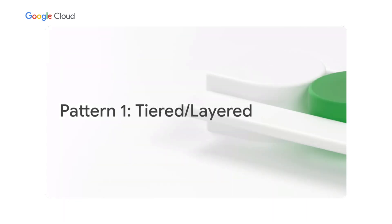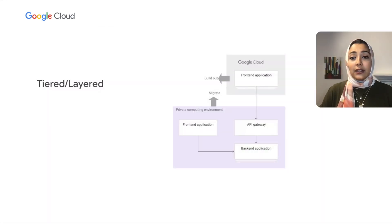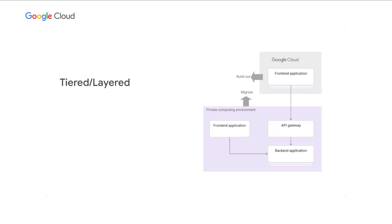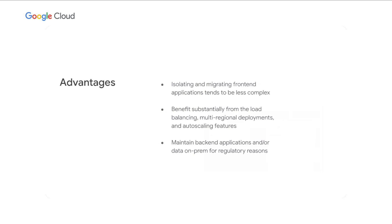The first pattern we will talk about is the tiered or layered pattern. The idea is to focus first on deploying front-end applications to the public cloud, while keeping your back-end applications and data in the private computing environment. Some advantages are that this allows you to start with the less complex migrations, benefit from what Google Cloud does well — like load balancing and auto-scaling — and keep your data and back-end on-prem for regulatory reasons.